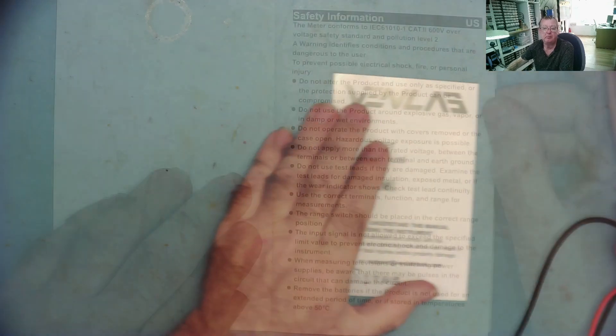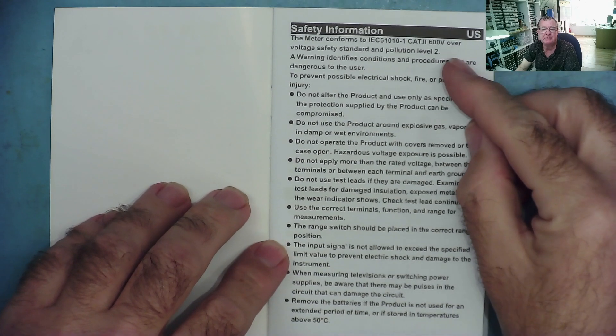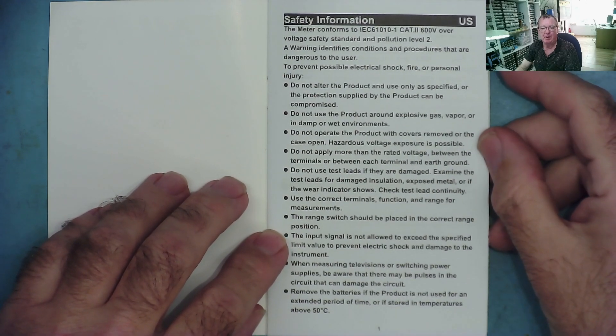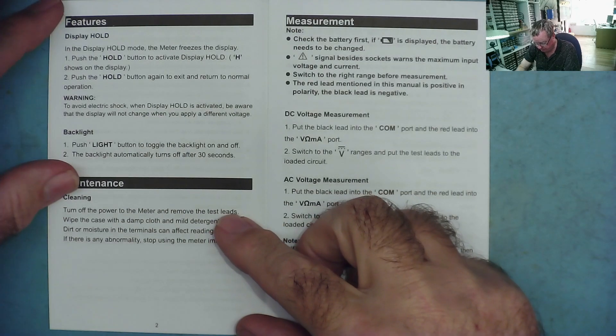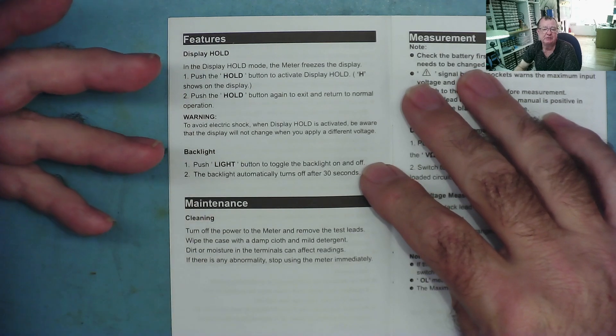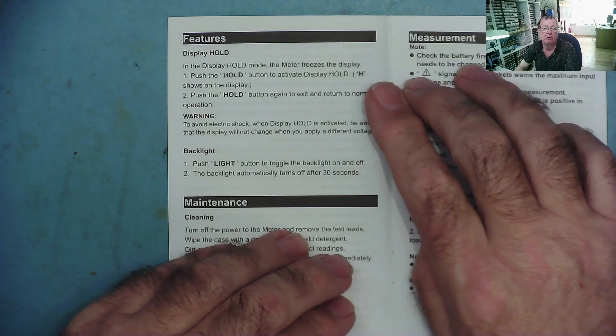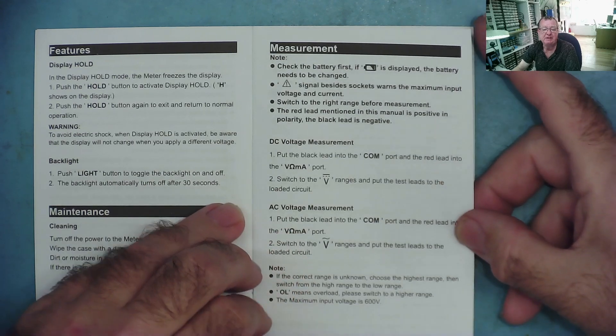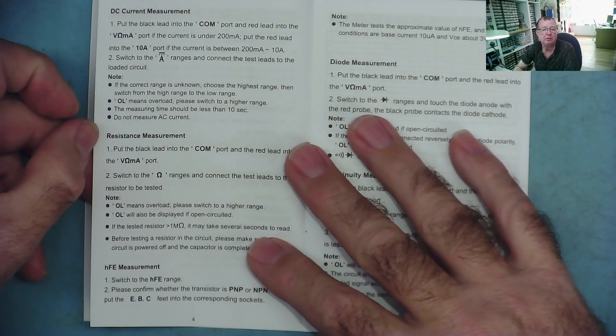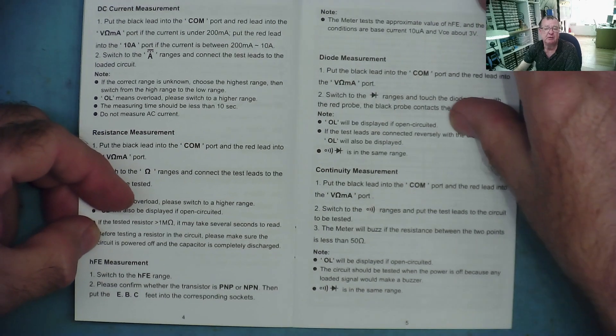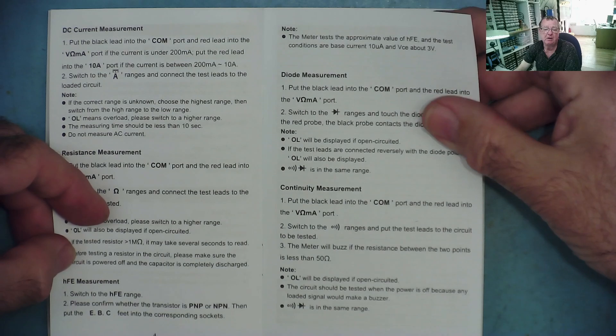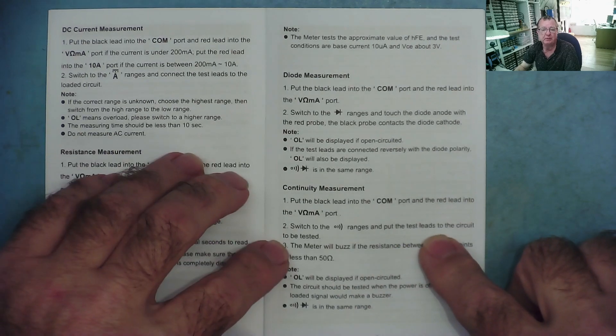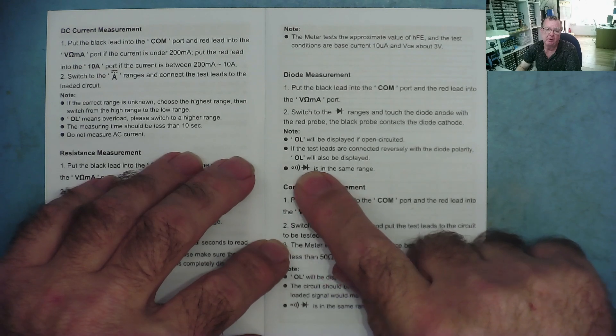Let's take a quick look at the manual. We have the usual safety information. It says this conforms to CAT II 600 volts or over—I'll take them at their word. It mentions it has a display hold so you can freeze a particular voltage reading. A little bit about measurement—DC and AC measurement, just telling you how to insert the leads correctly, DC current, resistance, gain to test transistors. We have a diode mode and continuity mode. It does say it will buzz, so we can have a look at that. I think it also says it has a bleeper on the diode mode.